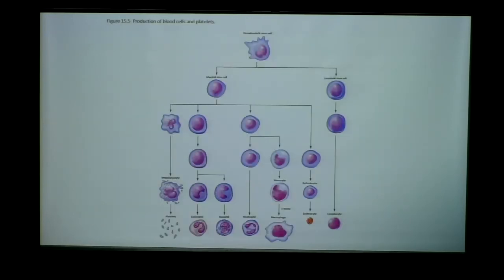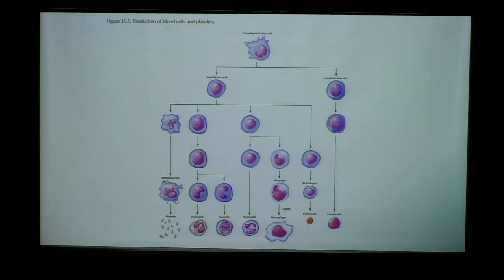All blood cells come from a single hematopoietic stem cell — a single undifferentiated cell that gives rise to all other cell lines, including platelets. Although platelets are non-cellular fragments, they also arise from megakaryocytes, which are precursor cells to blood. We won't focus much on the precursors; the important point is that all blood cells come from a single hematopoietic stem cell, and today we'll focus specifically on the erythrocyte, the red blood cell.